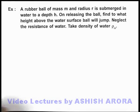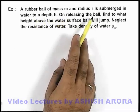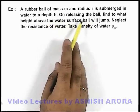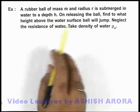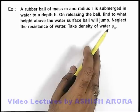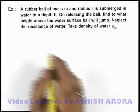In this example, a rubber ball of mass m and radius r is submerged in water to a depth h. On releasing the ball, we are required to find to what height above the water surface the ball will jump. We can neglect the resistance of water and take the density of water as ρ_w.